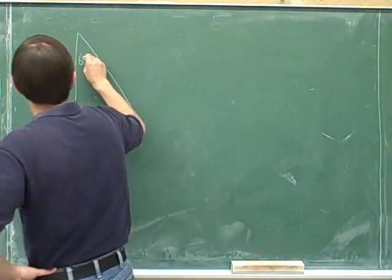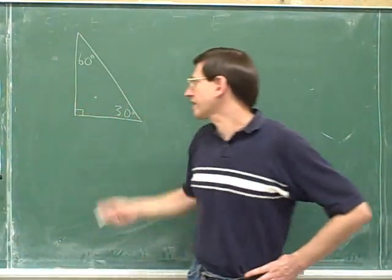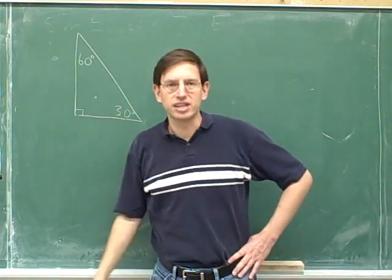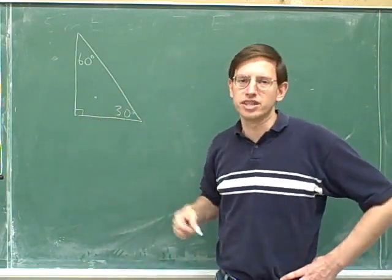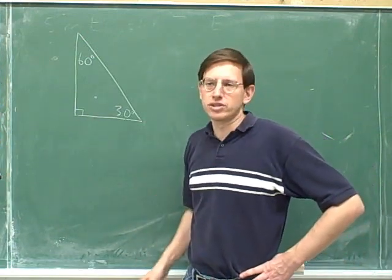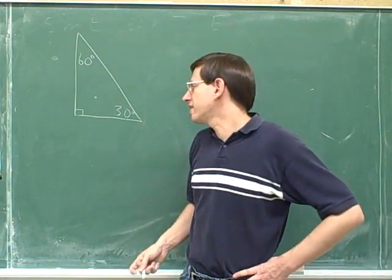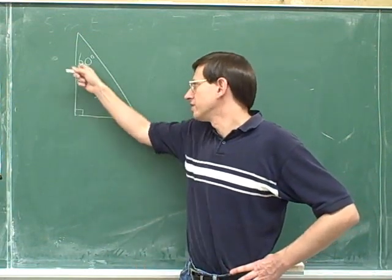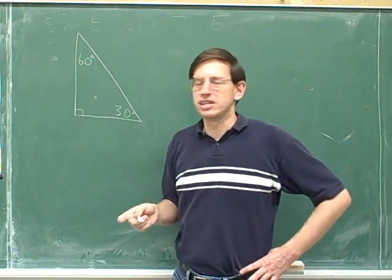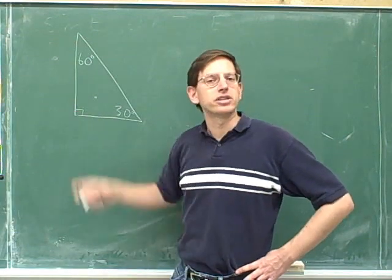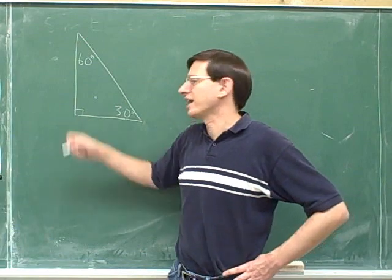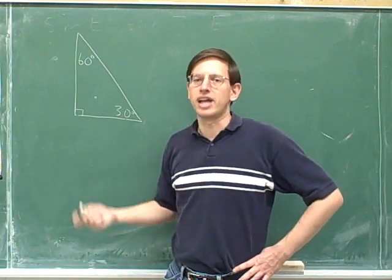So this must be 60. You can check: 60 plus 30 plus 90 is 180 — there are 180 degrees in a triangle. But the simpler way to work, since we're only dealing with right triangles, is to say that if you ignore the right angle, the two remaining angles have to add up to 90. These two angles always have to add up to 90, so that when you add the 90 degree angle, you've got 180.